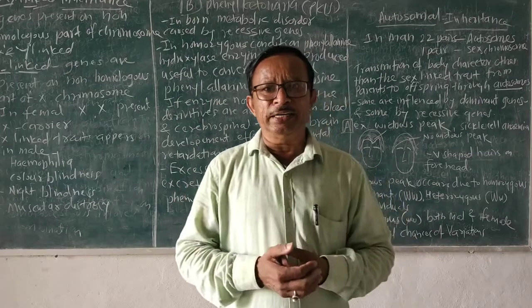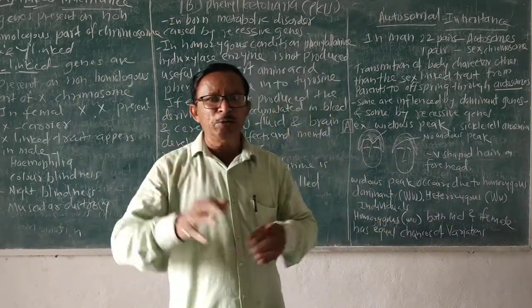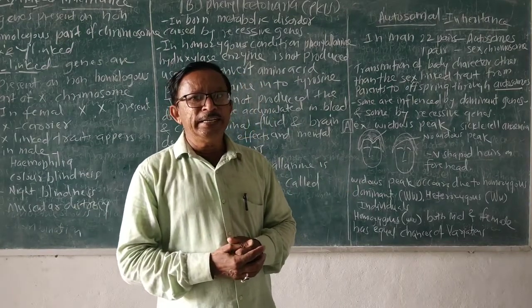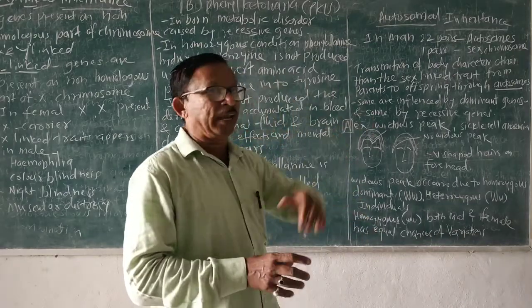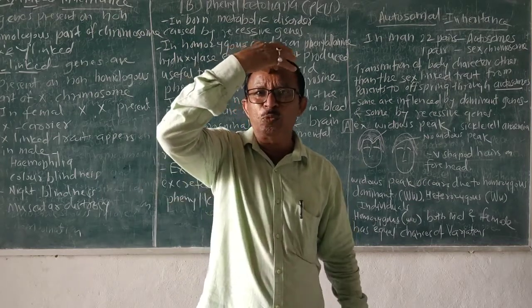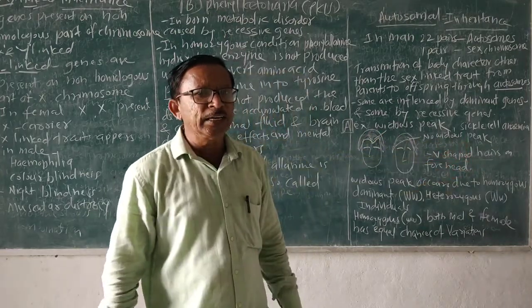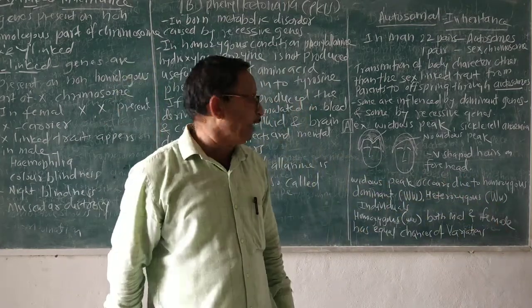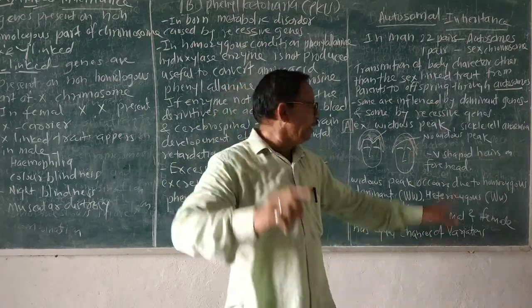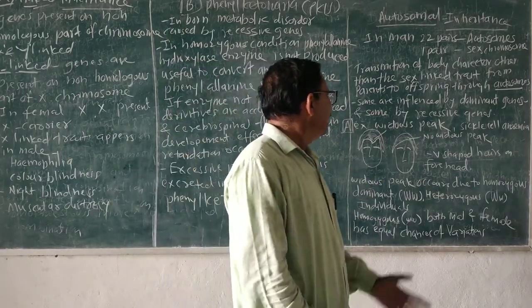In autosomal inheritance, some traits are influenced by dominant characters and some are influenced by recessive characters. There are two trends: dominant character and recessive character - they express the phenotypic expression. One example used in our study is called widow's peak. What is widow's peak? It is a character expressed morphologically - it is visible in some individuals, and when absent it is called no widow's peak.